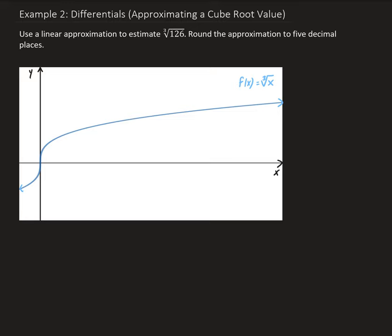In this figure, we have the graph of the cube root of x, which is x to the 1/3 power. To do our estimate, we want to choose a number that's close to 126 and for which we know the cube root. That number is going to be 125, because we easily know that the cube root of 125 is five — five times five times five is 125.